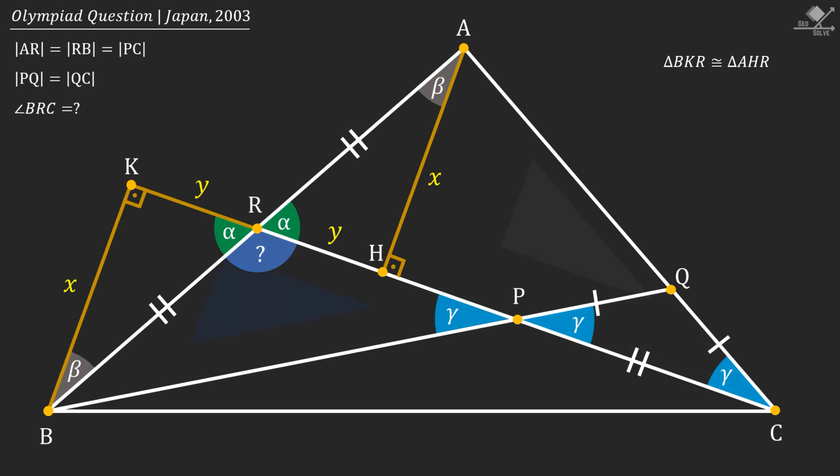Now let's focus on these two shaded triangles. If you notice these two triangles are also congruent. So we can write PK equals CH.